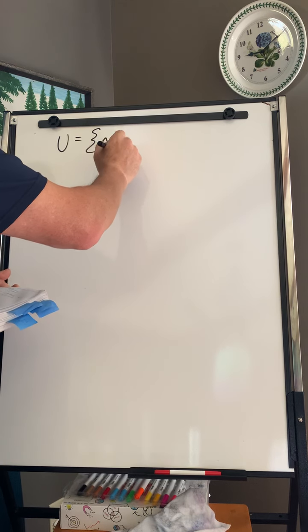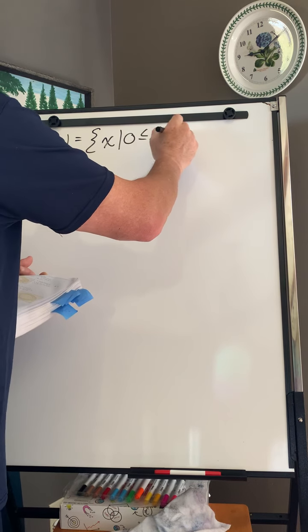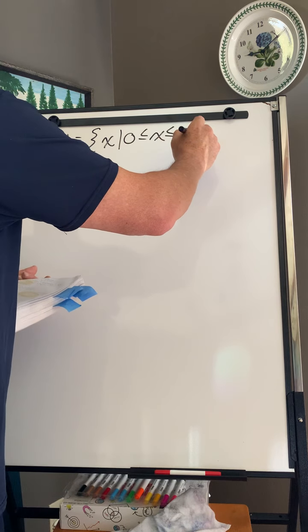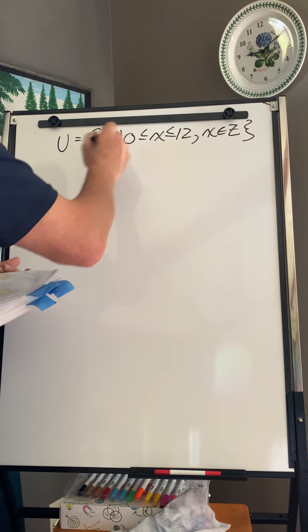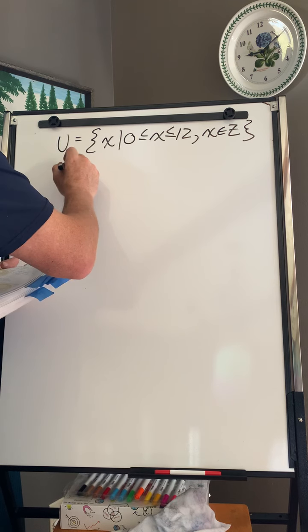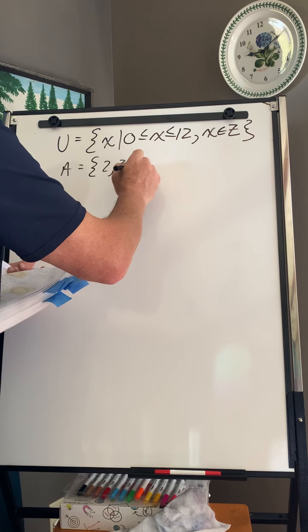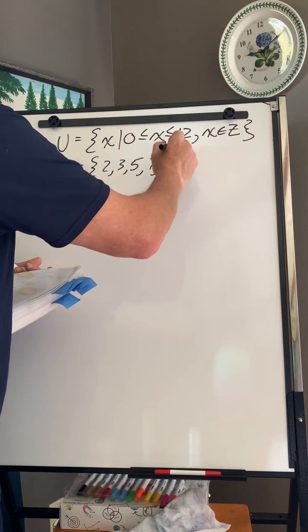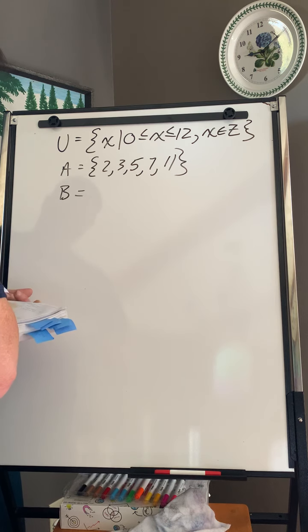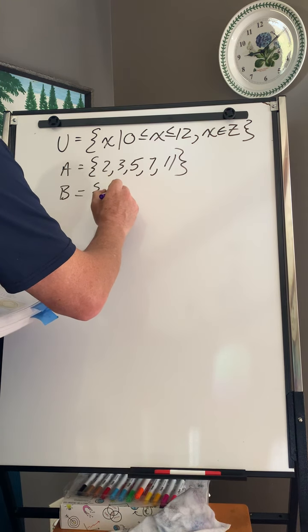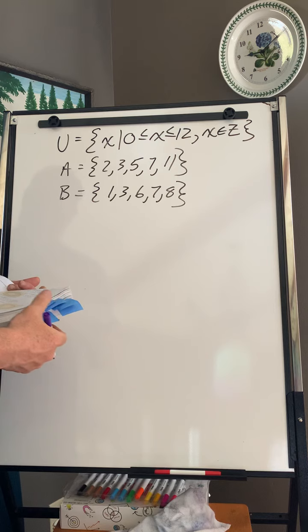I have a universal set which is x, 0 less than or equal to x less than or equal to 12, where x is an integer. So they're just writing it a bit differently. They want to include 0. A is 2, 3, 5, 7, 11. And then I get B: 1, 3, 6, 7, 8. And it wants us to draw a Venn diagram.